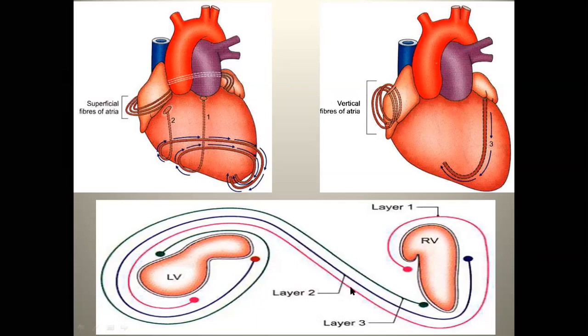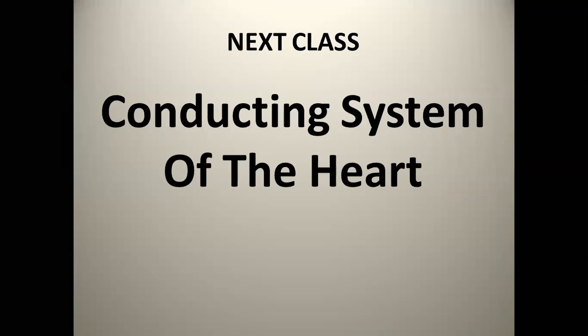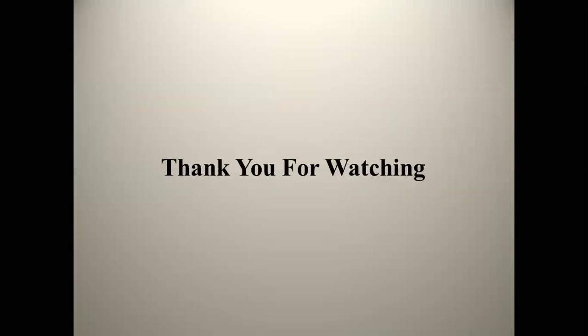First layer, second layer, and third layer. First layer is the right ventricle — the fibres go into the left ventricle. The second layer is deep. The other layer is the inner side, showing a decreasing pattern and an increasing pattern. The next layer is the same part in the left ventricle. Thank you.